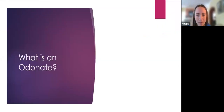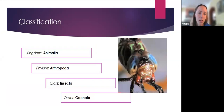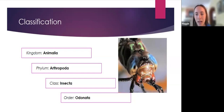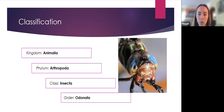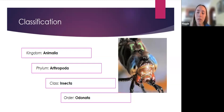So what is an Odonate? Odonates are animals — arthropods, meaning they have an exoskeleton. They're in class Insecta, so they have a head, thorax, and abdomen, as well as six legs. They are in the order Odonata, which means 'toothed ones.' You can see in the picture they have a very strong jaw — a strong mandible that sometimes even appears to have jagged teeth.